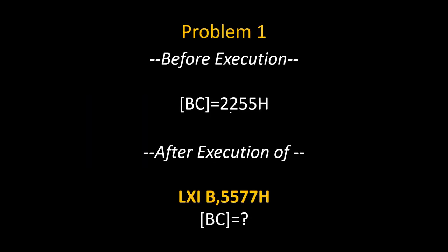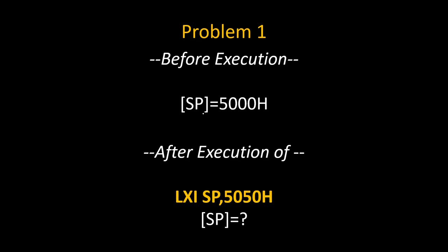Here are a few practice problems. Problem one: before execution of LXI B, the BC register pair was holding 2255H — after execution of LXI B, 5577H, what will be the new content of the BC register pair? Problem two: before execution the stack pointer was holding 5000H — after execution of LXI SP, 5050H, what will be the new value of the stack pointer? Write your answers in the comments.